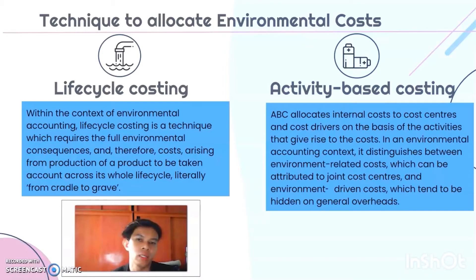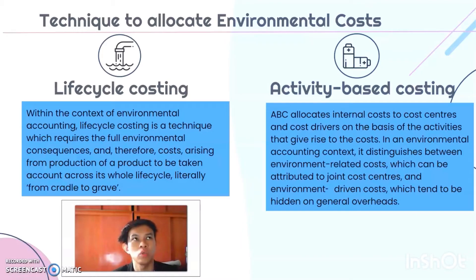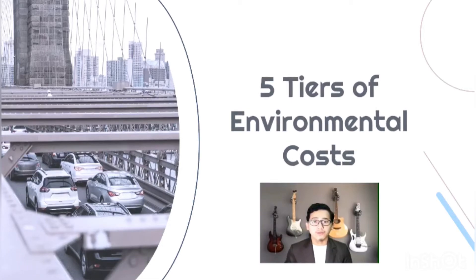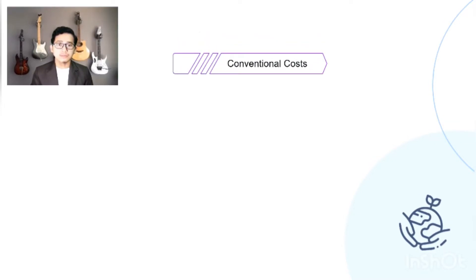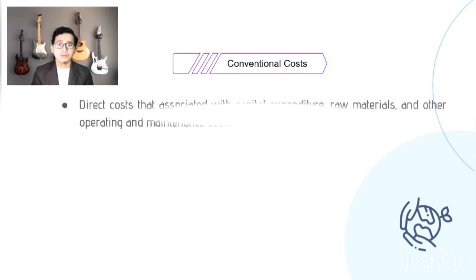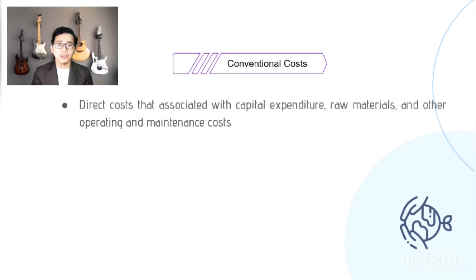These four techniques are used to allocate environmental costs. Now Azamuddin will explain the five tiers of environmental costs to give an overall idea of what environmental costs actually involve. The first tier is conventional costs — direct costs associated with capital expenditure, raw materials, and other operating and maintenance costs.